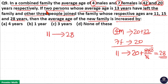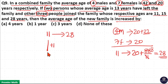Now, 2 persons left the family and 3 people joined the family. So the overall increment in the members of the family is 3 minus 2, which is 1. That is, 1 member joined the family. So 11 plus 1 equals 12, which becomes the total members of the new family.